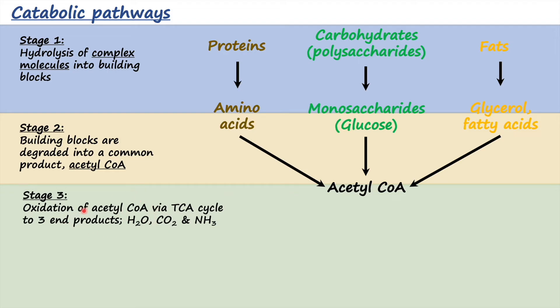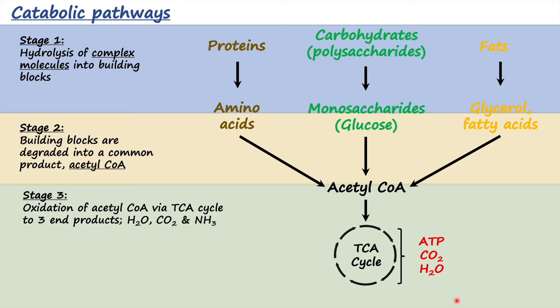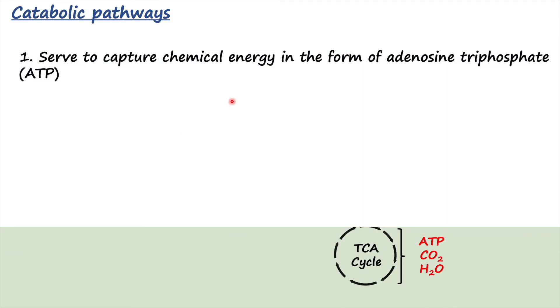The third stage of catabolism is the oxidation of acetyl CoA into water, carbon dioxide, and ammonia via a common pathway called the tricarboxylic acid cycle. The acetyl CoA is oxidized through this cycle to release energy in the form of ATP. At the same time, it releases smaller intermediary molecules — carbon dioxide, water, and ammonia — which are considered energy-poor end products.